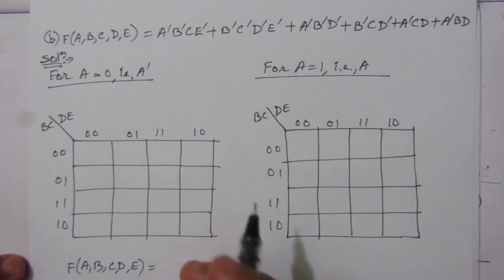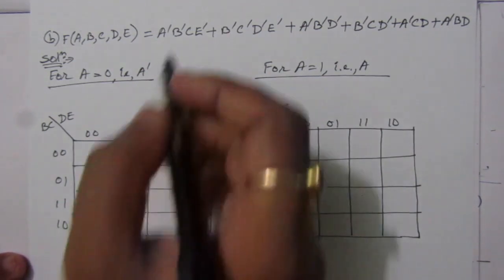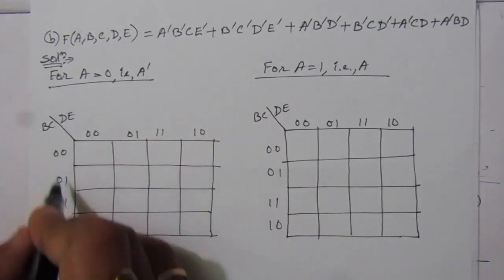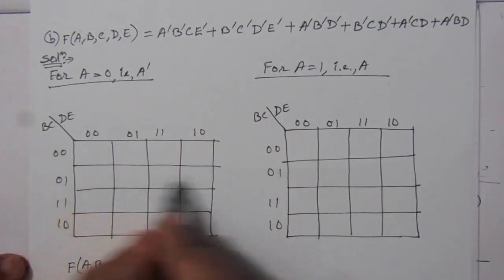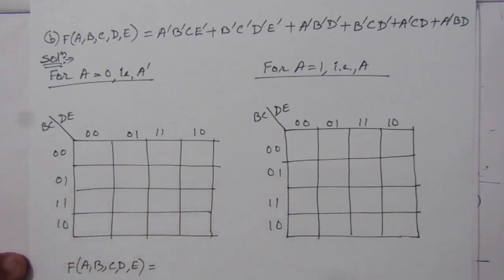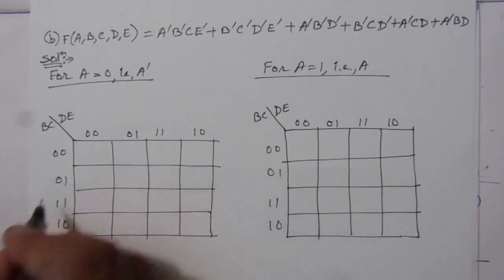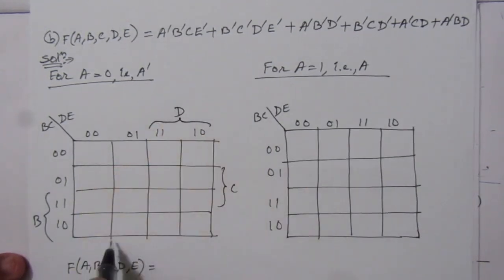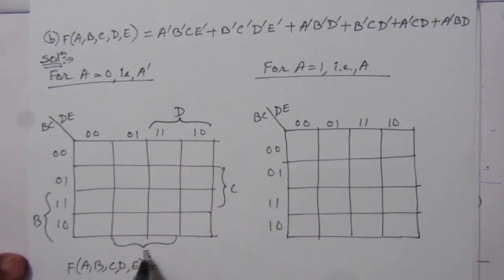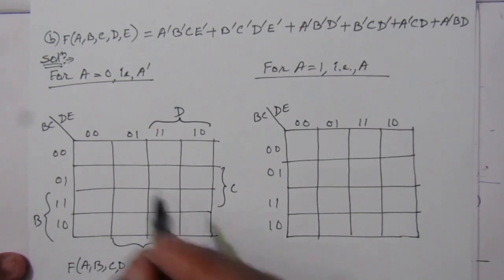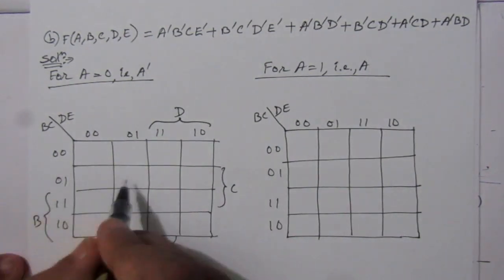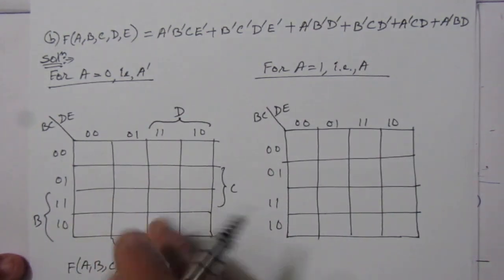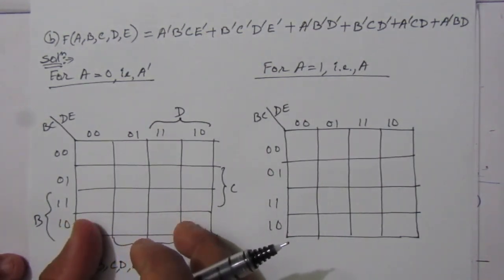For the term A-bar B-bar C E-bar: B-bar C is this row. E-bar means the first column and the fourth column, so we will put 1 and 1 here. We can see that B-bar C is this row, and E-bar corresponds to these two columns.